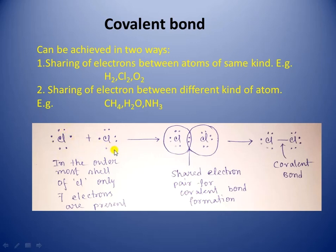This covalent bond is made of two electrons equally provided by each chlorine atom. Each chlorine atom has atomic number 17, with electronic configuration 1s² 2s² 2p⁶ 3s² 3p⁵. The outermost shell electronic configuration is 3s² 3p⁵, meaning seven electrons are present in the outermost shell.